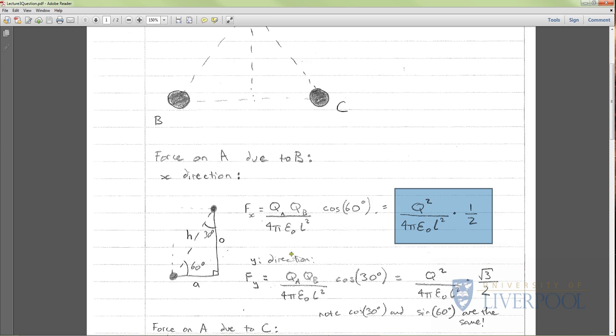Now we're going to look at the y direction. We're going to use the same triangle as before but we're looking at the y axis. This time we want cos 30 because that will tell us the magnitude in the upwards direction. Cos 30 is root 3 over 2, and this is the magnitude from the previous step. So that is the force on A due to B done.